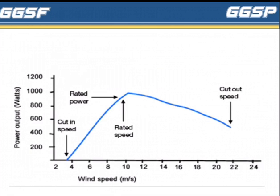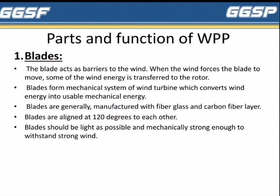Here is a graph of wind turbine terminologies. Now, the parts and functions of wind power plants. First is Blades. The blade acts as a barrier to the wind; when the wind forces the blade to move, some of the wind energy is transferred to the rotor. Blades form the mechanical system of a wind turbine which converts wind energy into usable mechanical energy. They are generally manufactured with fiberglass and carbon fiber layers, aligned at 120 degrees to each other, and should be as light as possible yet mechanically strong enough to withstand strong wind.